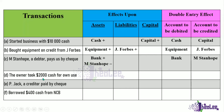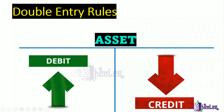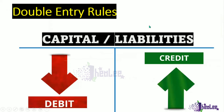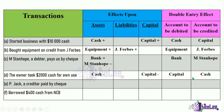Transaction D: the owner took $2,000 cash for own use. The two items affected are cash and capital. There is a reduction in cash because the money is coming out of the business, and there is a reduction in capital because it was taken for personal use. Cash is an asset; a reduction in asset means you credit cash. There is a reduction in capital, and when capital decreases, you debit. So the item to be debited is capital.